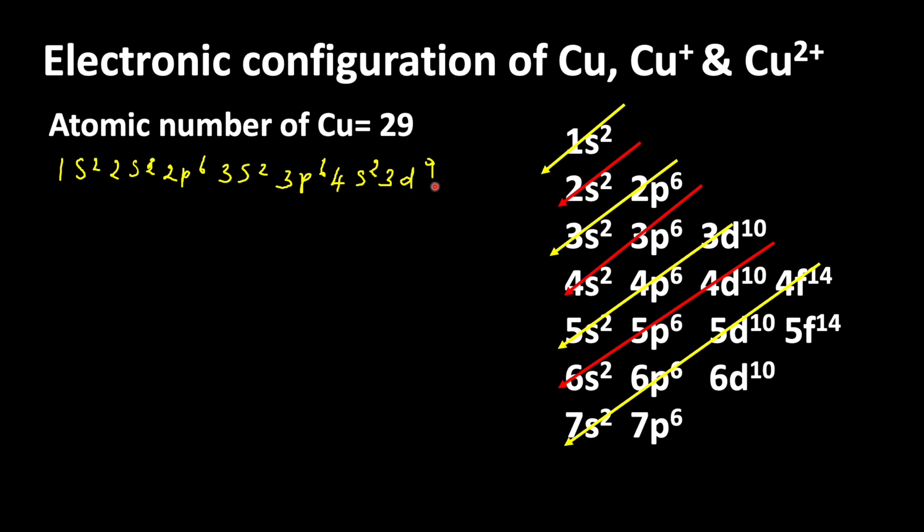To get stability, one electron from 4s orbital will move to 3d orbital. This transfer is possible due to less energy difference between 4s and 3d orbitals.